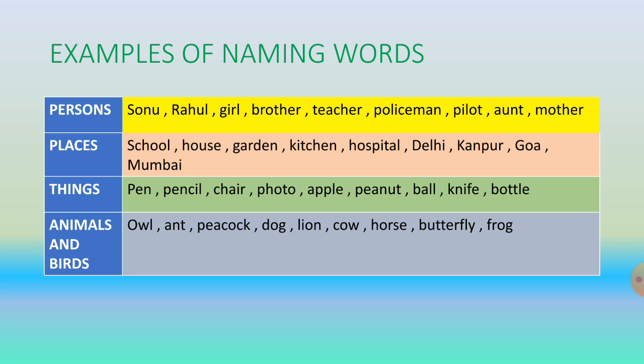Now things: pen, pencil, chair, photo, apple, peanut, ball, knife, bottle — these are examples of things. Animals and birds: owl, ant, peacock, dog, lion, cow, horse, butterfly, frog — these are animals and birds.